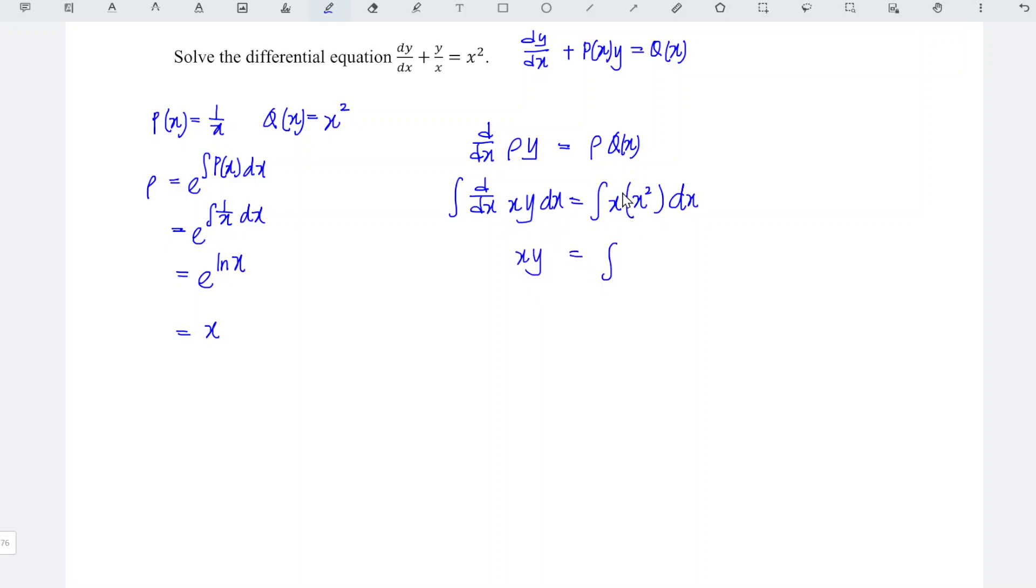Integrate x to the power of 1 times x to the power of 2. So x cubed dx. When we integrate power plus 1 over power plus 1, remember to add the constant c. So which means that right hand side is equal to x to the power of 4 divided by 4 plus c.